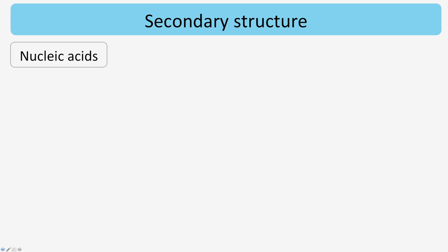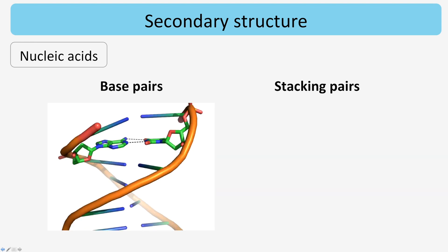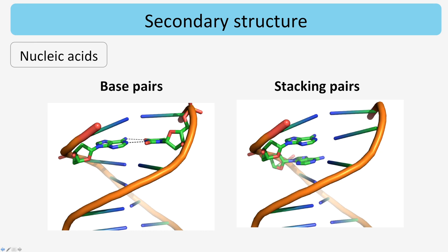Secondary structure elements for nucleic acids are base pairs and stacking pairs. Base pairs have typically a somewhat planar configuration, and stacking nucleotides are parallel to each other.